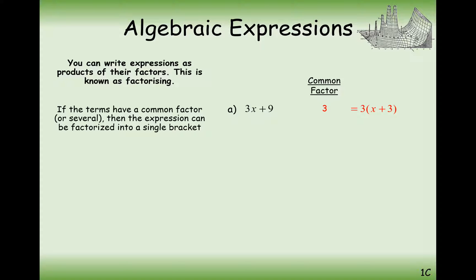Factorising is the opposite of expanding brackets. So what do I need inside my bracket to expand it to make 3x plus 9? 3 needs to times by x to make 3x, and 3 needs to times by another 3 to make the 9. So that's our final answer there.